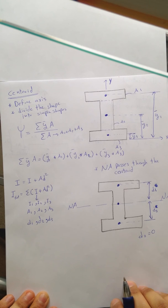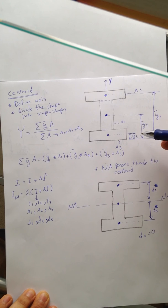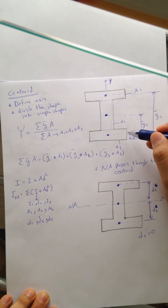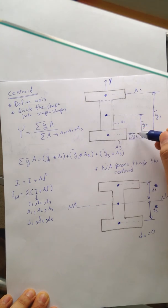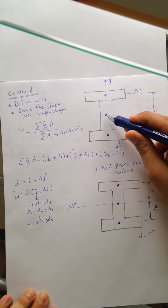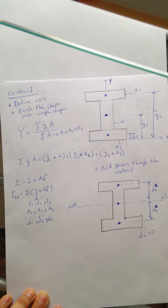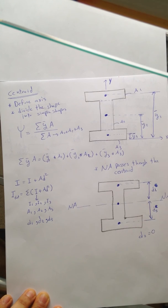Please make sure you understand the difference: y-bar is the distance from the local centroid of a shape to the x-axis. D is the distance from the local centroid of a shape to the neutral axis — not the x-axis, but the neutral axis.